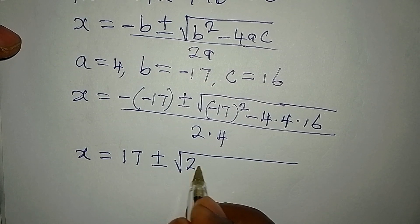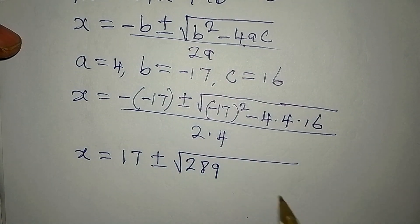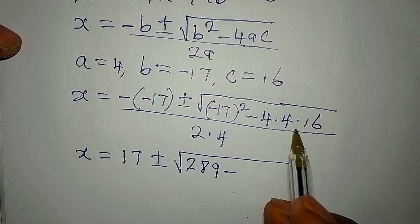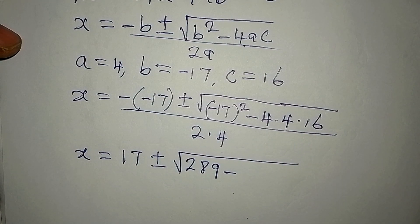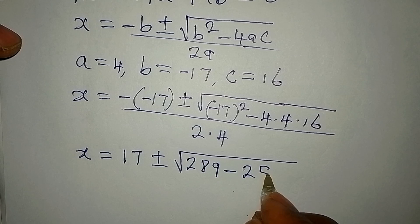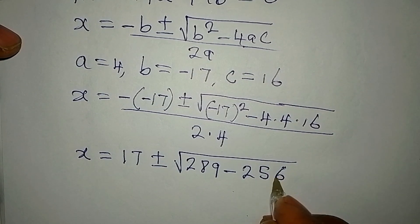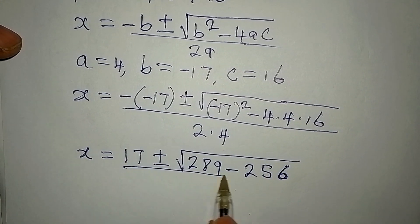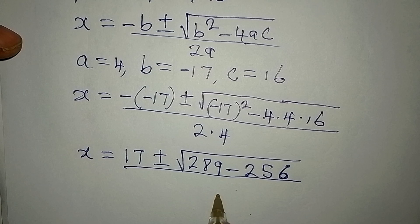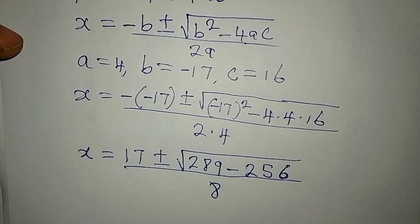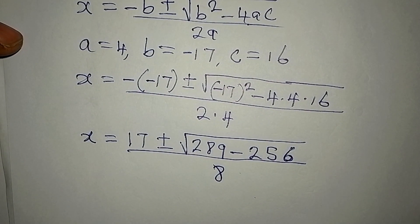So, we write 289. Then minus 4 times 4 is 16. 16 times 16 is 256. And then the whole of this is over 2 times 4, which is 8. Simple, right? Let's continue.